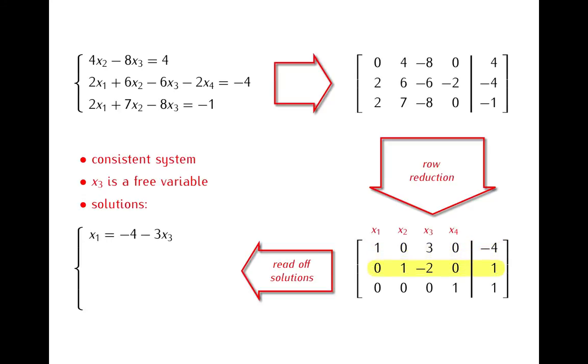The second row tells us that 1 times x2 minus 2 times x3 equals 1, which equivalently means that x2 is equal to 1 plus 2x3.